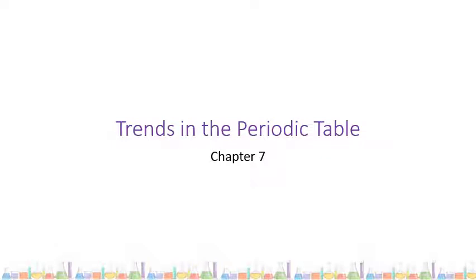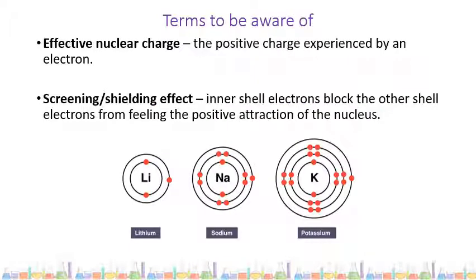In this video, we're going to start Chapter 7, Trends in the Periodic Table. Before we start, a few terms to be aware of. You are going to hear a lot the term effective nuclear charge, and this is the net positive charge experienced by an electron in an atom.